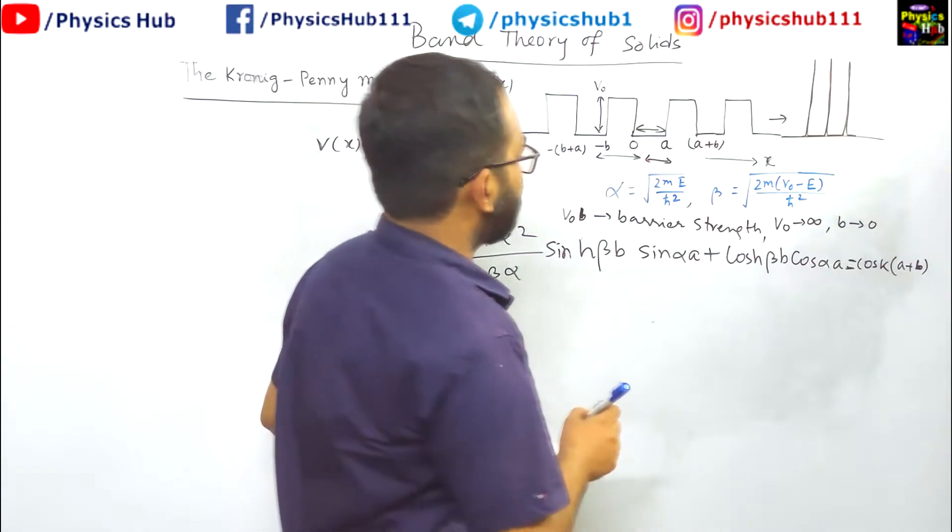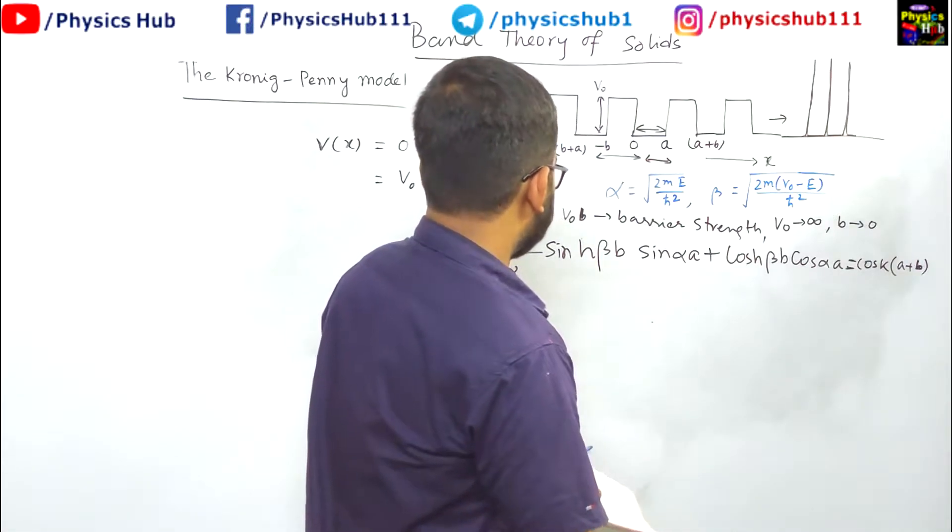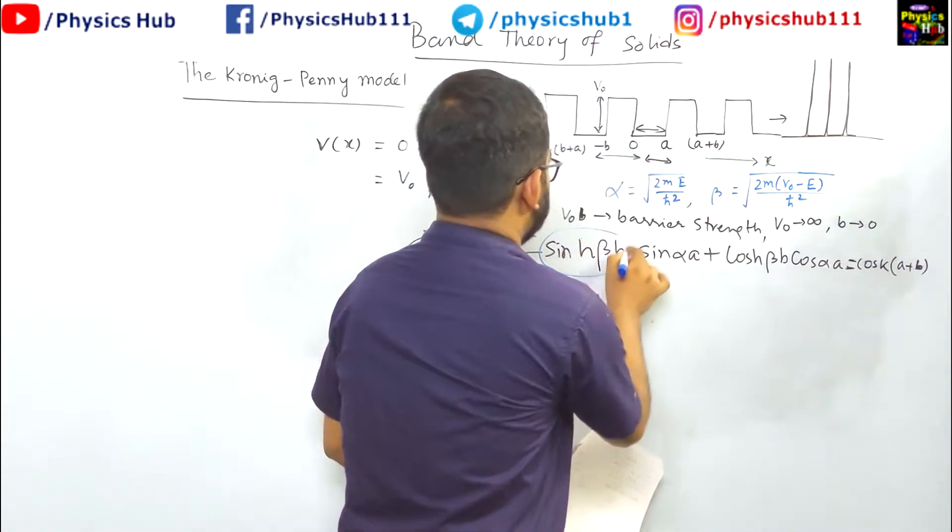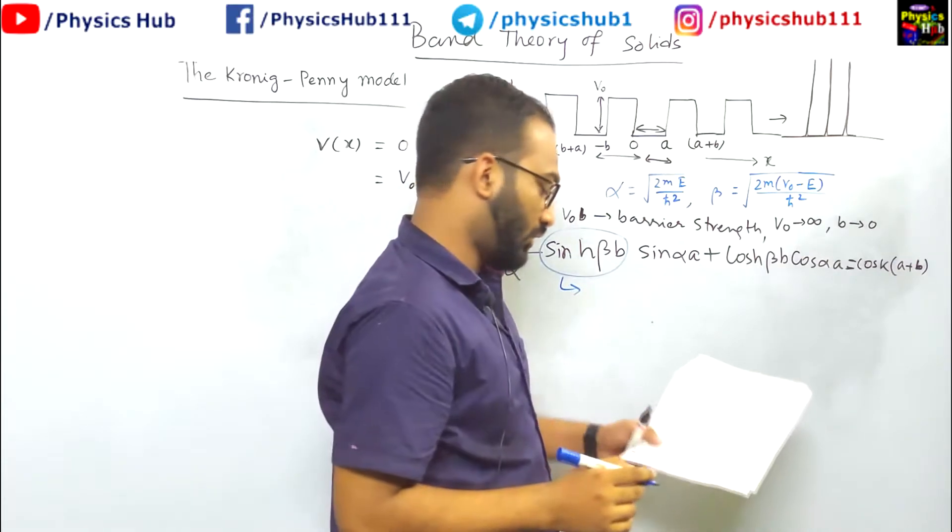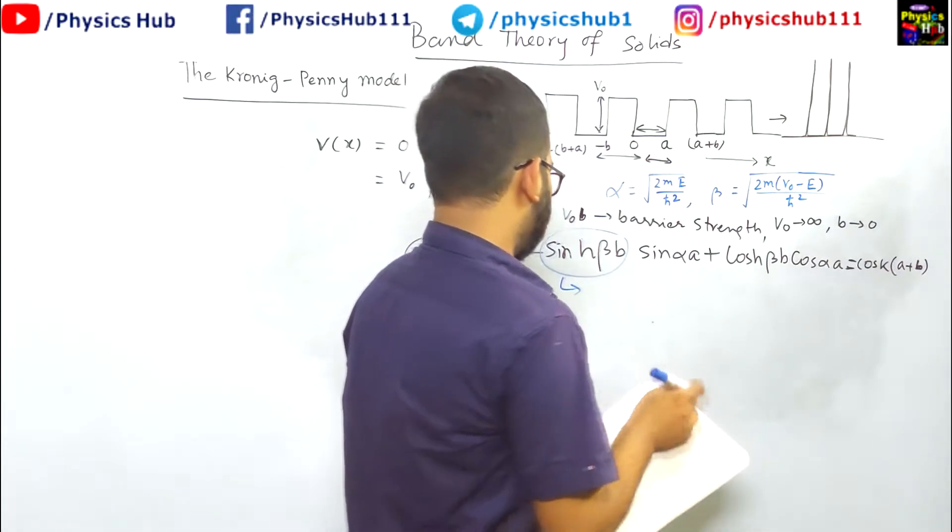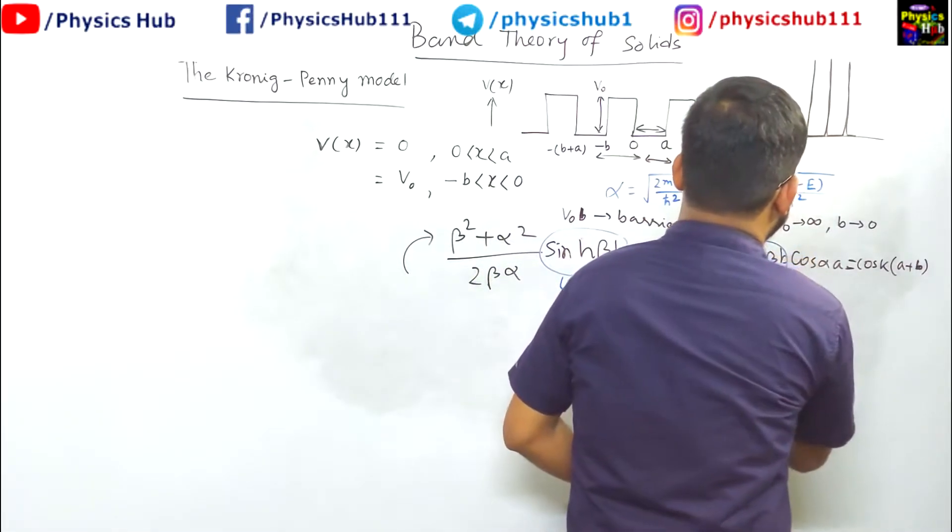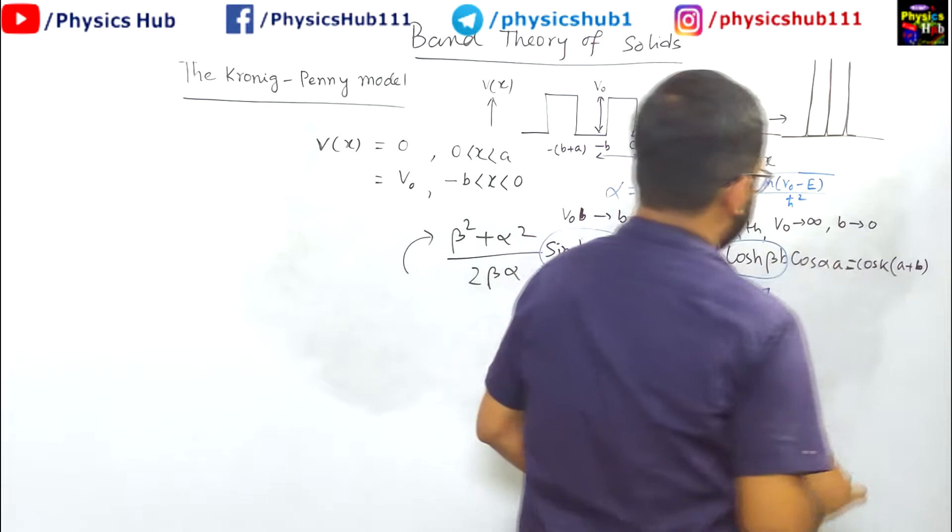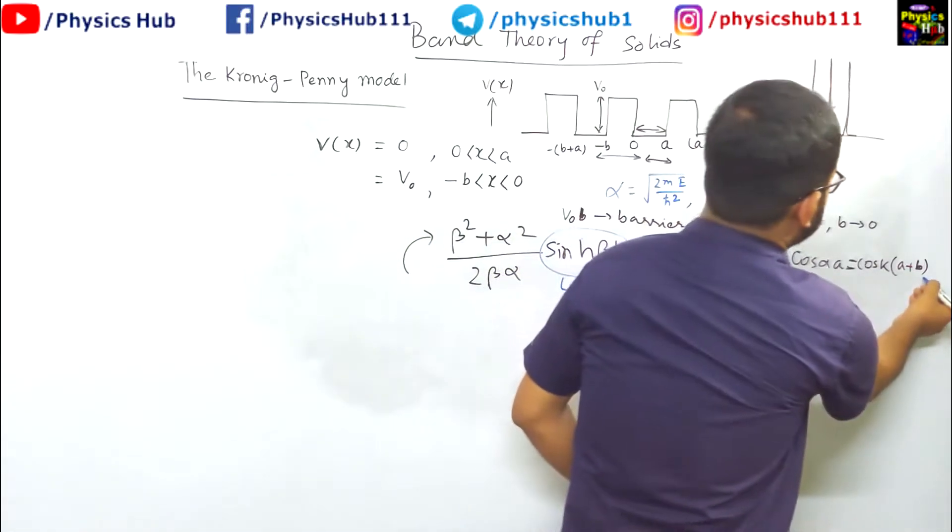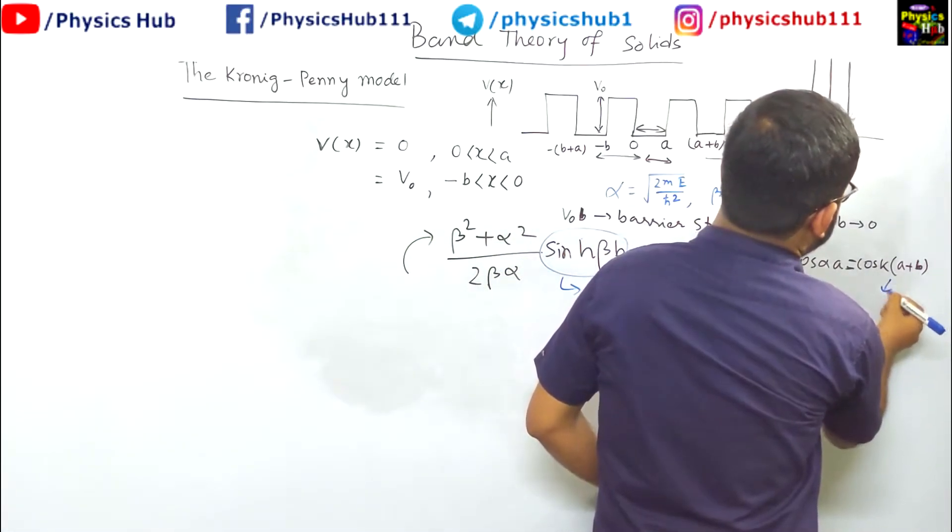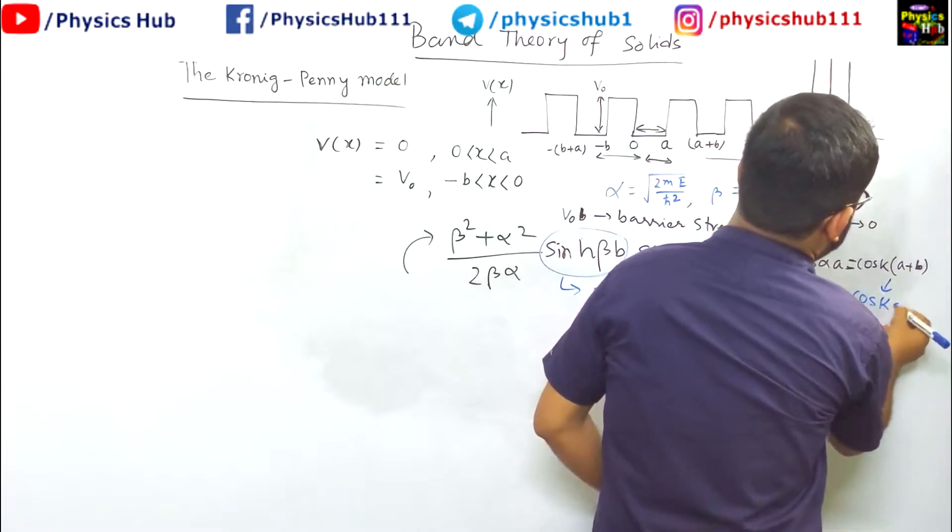If v naught tends to infinity, this sinh hyperbolic beta v will tend to beta v, and cosh hyperbolic beta v will tend to 1. Here cos a plus b, b is tending to 0, so this will become cos k a.